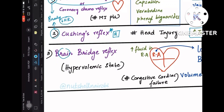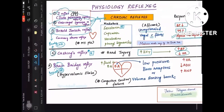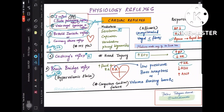Bainbridge reflex — remember 'raised heart rate in the brain' as a mnemonic — has the response of increased heart rate. This reflex is seen in hypervolemic states, where increased fluid levels cause more fluid to enter the right atrium.